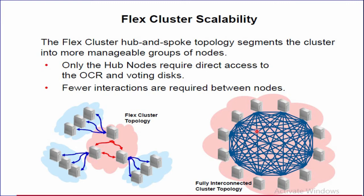Leaf Node characteristics: a Leaf Node is more loosely coupled to a cluster than a Hub Node. Leaf Nodes automatically discover the Hub Node at startup, meaning the Leaf Node automatically discovers the Hub Node when the cluster software is started. Leaf Nodes do not require direct access to shared storage, so a Leaf Node can participate in the cluster without storage-related hardware and network connections, such as a Fibre Channel network connection.